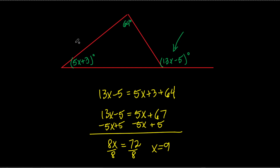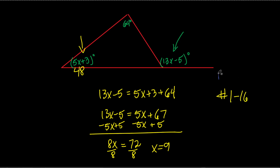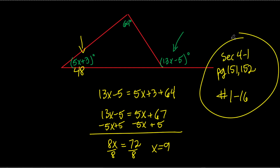Once we know X equals 9, we can find the angle: 5 times 9 plus 3 equals 45 plus 3 equals 48 degrees. Then you could find the remaining angles from there. Your homework is problems 1 through 16 on lesson 4.1, pages 151 and 152. This lesson is also on YouTube.